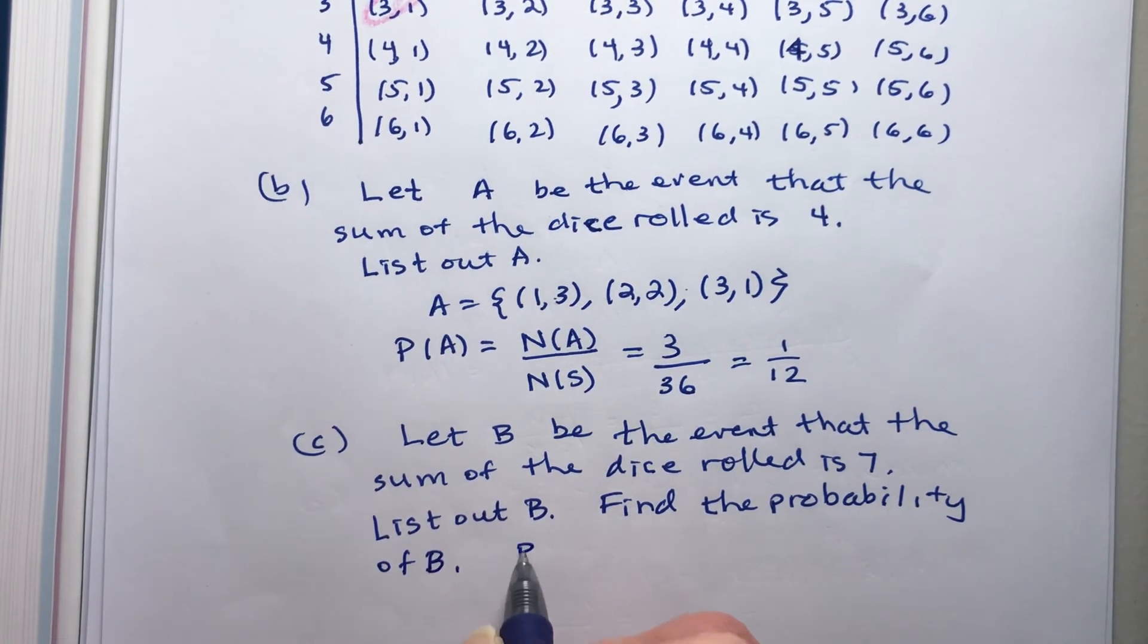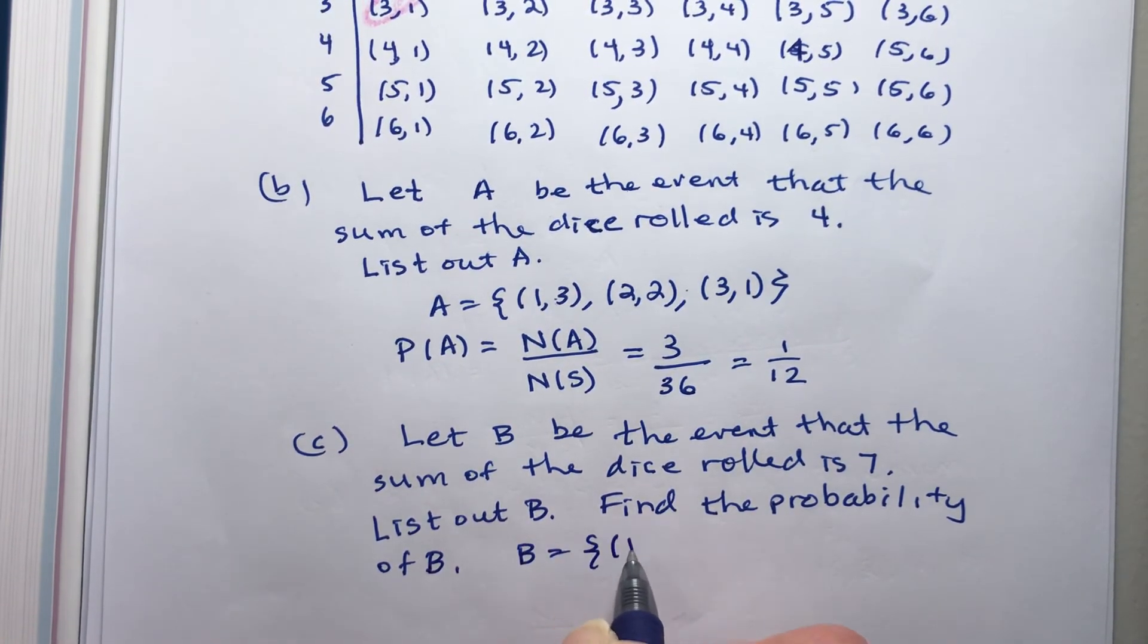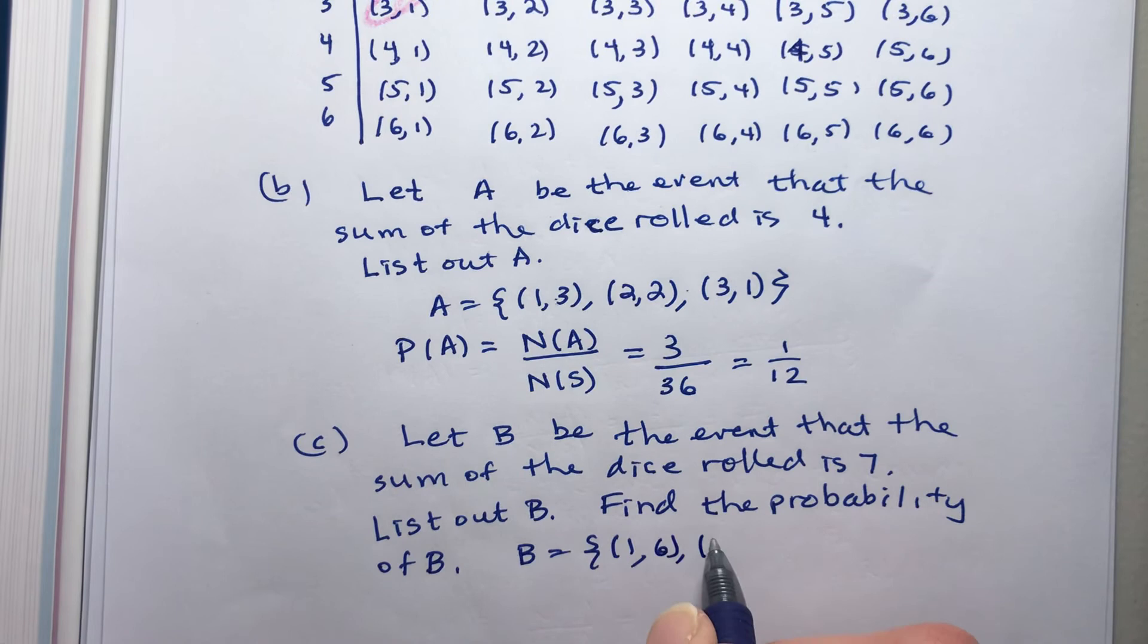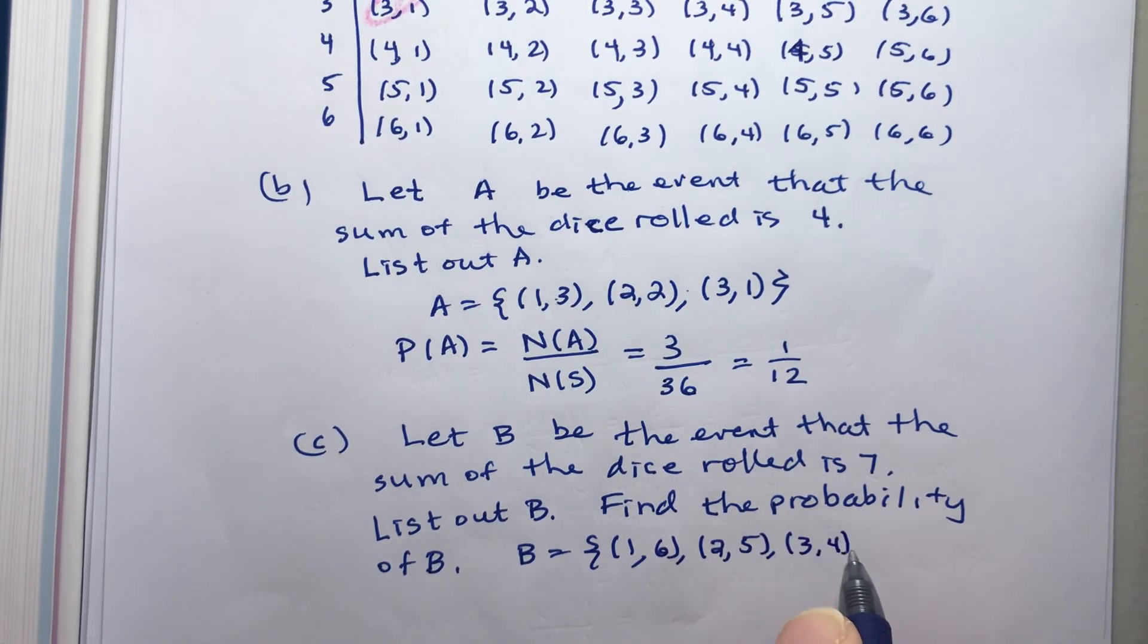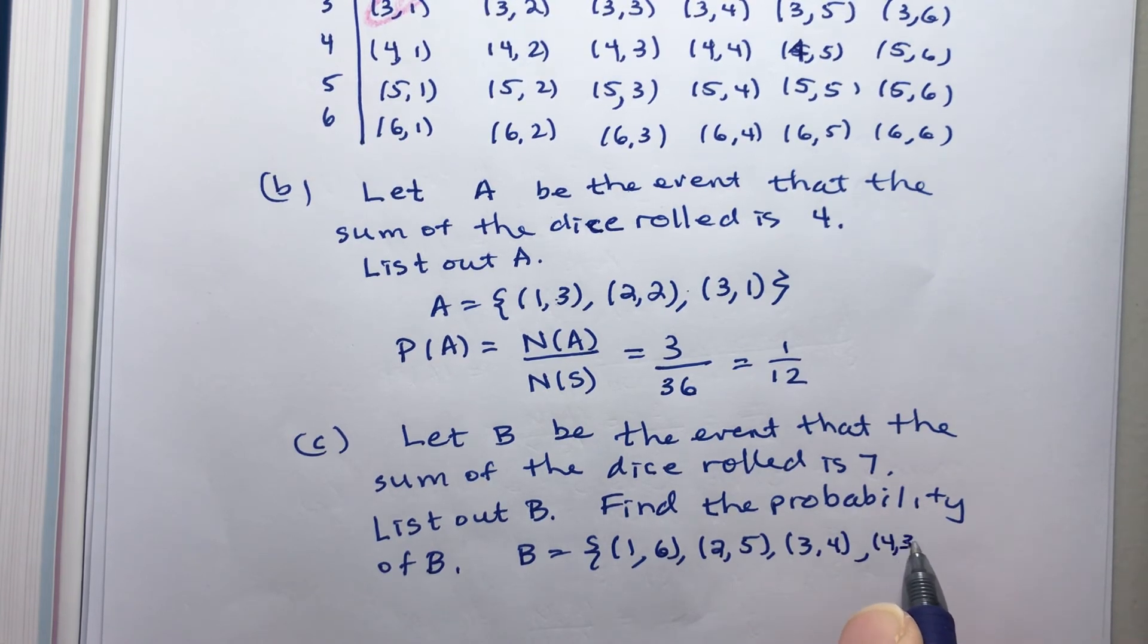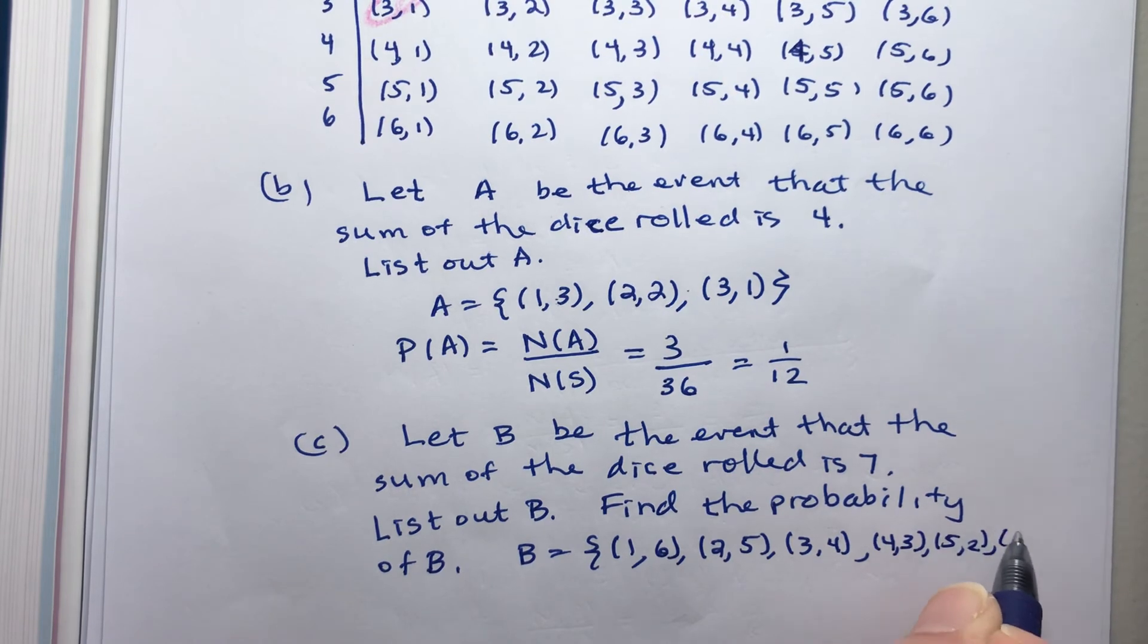So B is going to equal - all right, I'm going to start off with one as the first roll. One plus six makes seven. Then it's two. Two plus five makes seven. Three plus four makes seven. Four plus three makes seven. Five plus two, six, one.